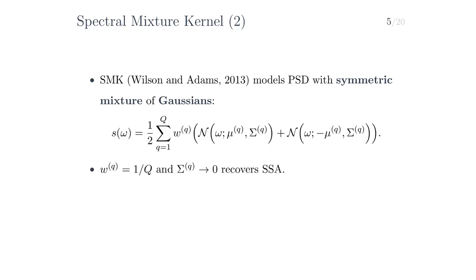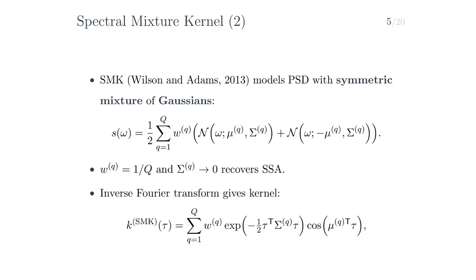These bumps have widths as determined by their covariance matrices σq. The spectral mixture kernel generalizes the sparse spectrum approximation. Indeed, if we let the covariance matrices go to zero, then these normal distributions become Dirac deltas, and if we then set the weights to one over the number of components, we recover the form of the power spectral density assumed by the sparse spectrum approximation. If we inverse Fourier transform the PSD assumed by the spectral mixture kernel, we get the spectral mixture kernel. If we let the covariance matrix go to zero and set the weight to one over q, we recover the form of the kernel assumed by the sparse spectrum approximation.